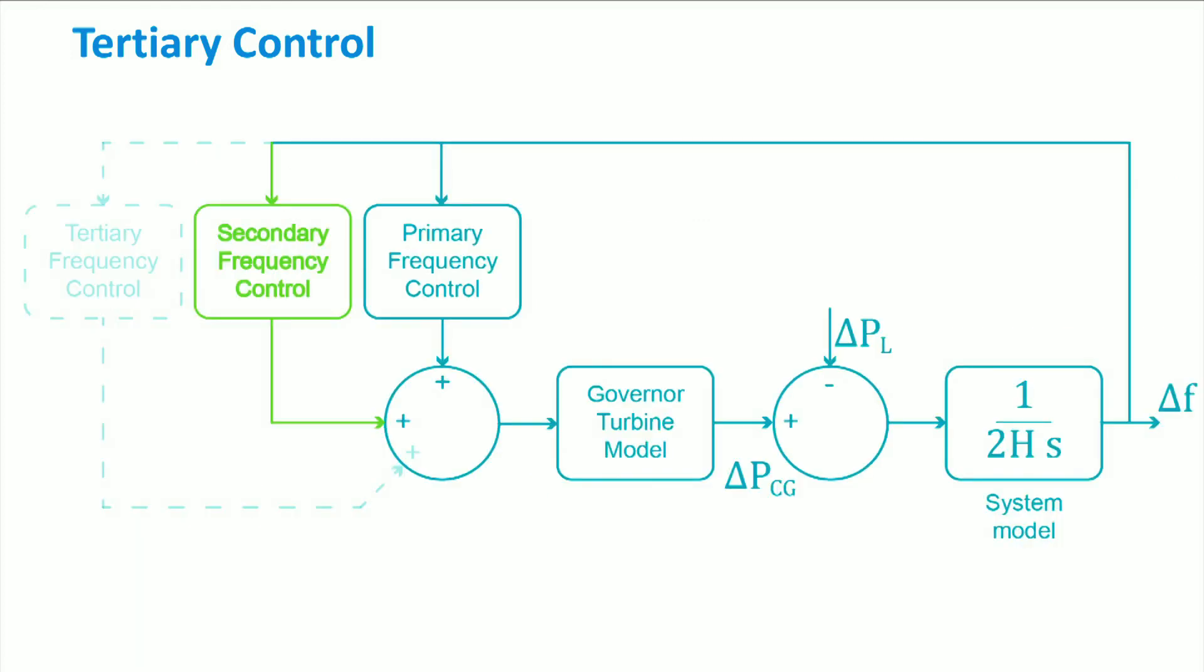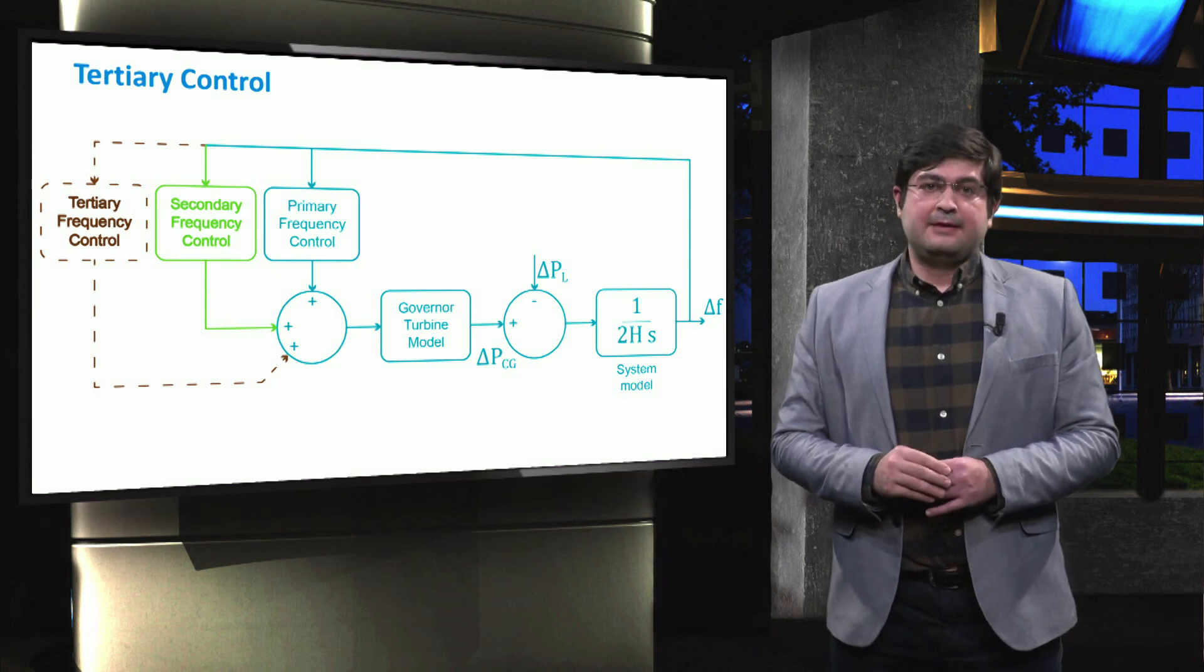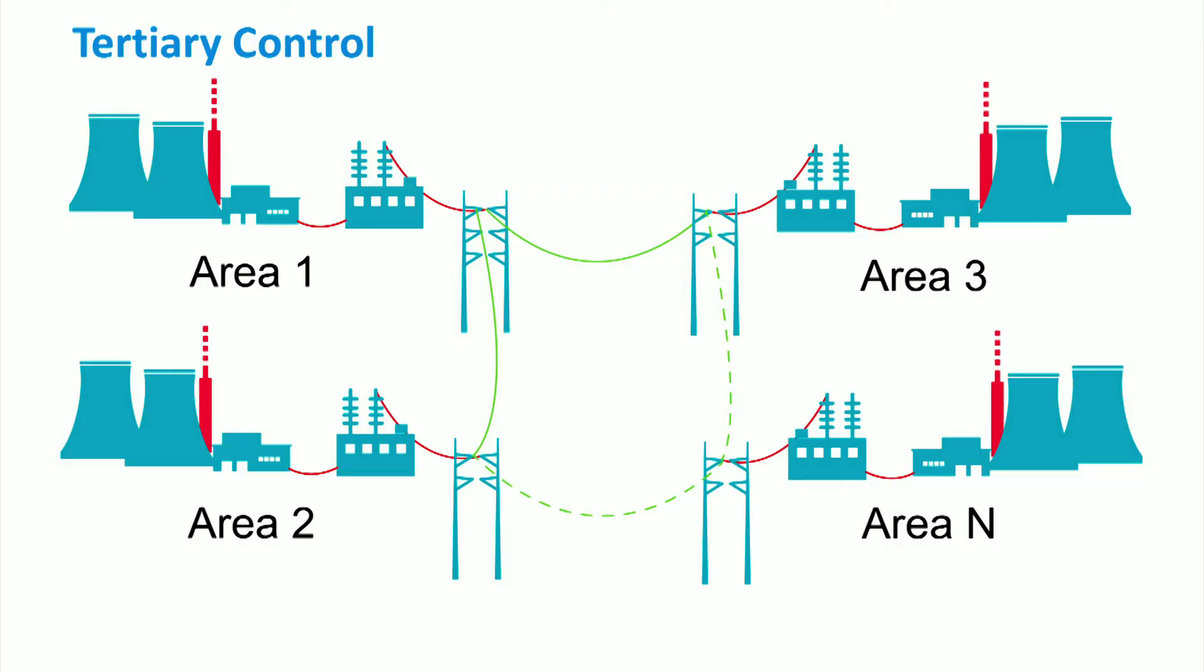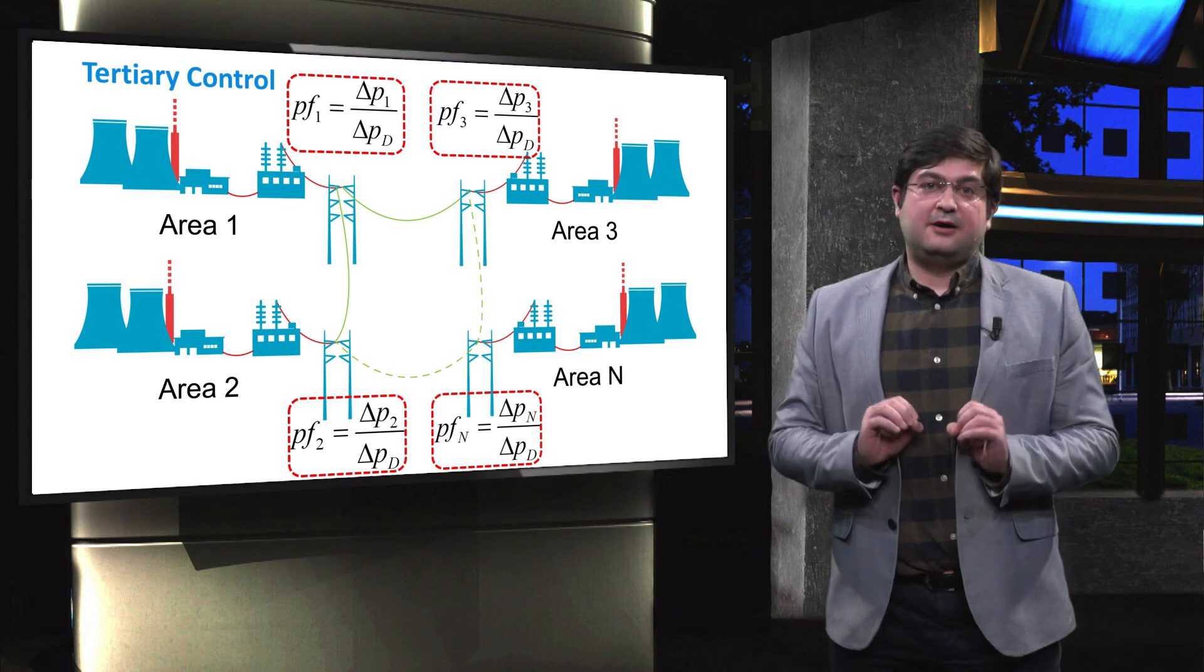The tertiary control is added to the previous control scheme where it manually adjusts the persistent deviation of the power from several minutes to several hours after the disturbance. In multi-area electrical grids, for instance from area 1 to area n, the area control error shall be properly distributed among all the generators and this is why the tertiary control is needed. This is typically carried out through a factor, the so-called participation factor, PF. Note that these participation factors for the areas 1 to n are determined according to the outcomes of the economic dispatch.